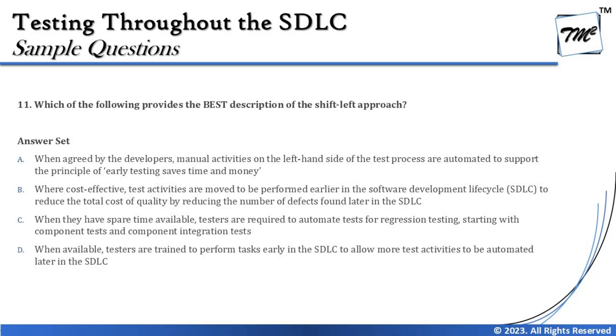Option C says when they have spare time available, testers are required to automate tests for regression testing, starting with component and component integration tests. Two issues: automation is not something done in spare time — it's a deliverable and a project need. And automation has nothing to do with the shift left approach. Option D says when available, testers are trained to perform tasks early in the SDLC to allow more test activities to be automated later. The word 'later' contradicts the concept of shift left, and again focuses on automation rather than shifting left.